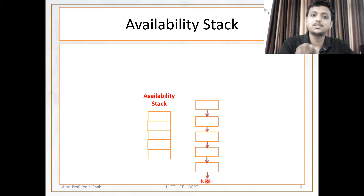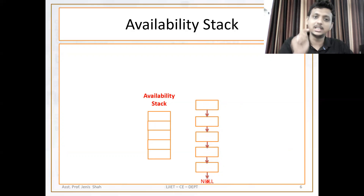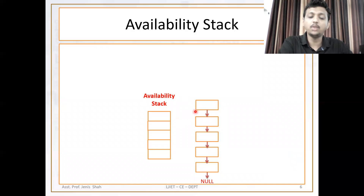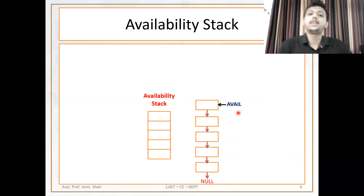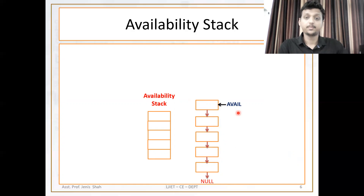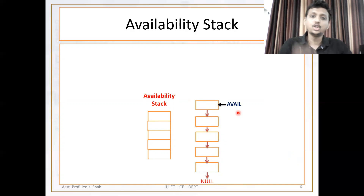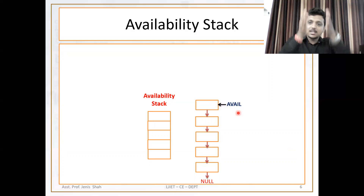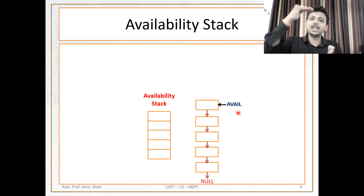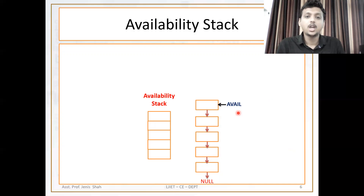I am going to take the whole lecture on this point only, because it is very important to understand linked list. If you can understand this availability stack, then it is very easy to understand each and every algorithm of linked list. In a stack, what is the pointer we use? Top pointer. The top pointer points to the top element of the stack. Similarly, 'avail' is a pointer which points to the topmost element of the availability stack.